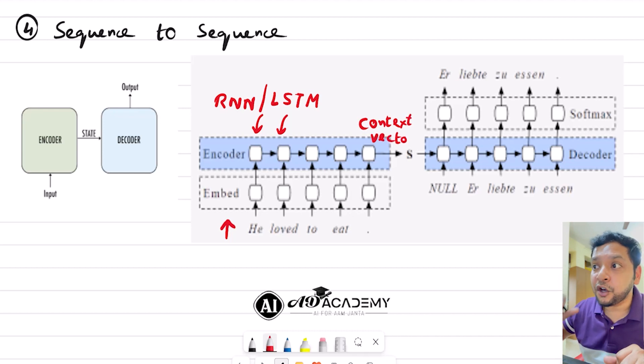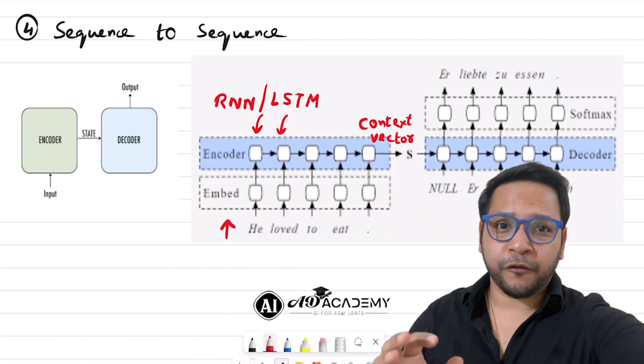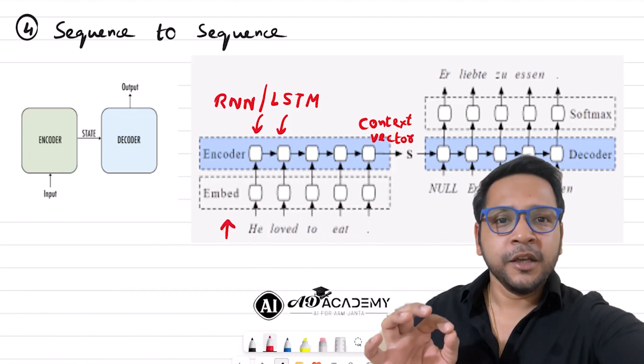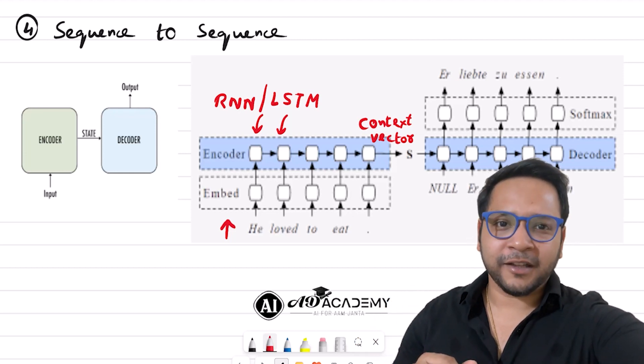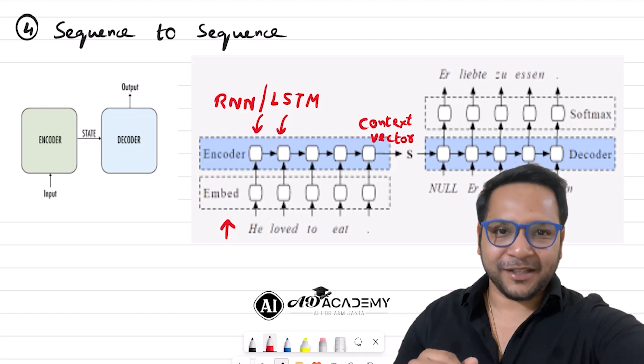And the encoder is sending this context vector to the decoder, where decoding has been done by using different types of RNN and LSTM architecture. And finally, the decoder is providing the French sentence, and thus we are having the translation from English to French. This is the first part of text generation before transformers using RNN, LSTM, and sequence-to-sequence. In the next part I will cover the rest. So keep watching.